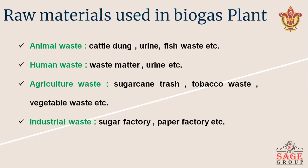The raw materials used in a biogas plant for the production of biogas include: animal waste such as cattle dung, urine, fish waste, and human waste; agricultural waste such as sugarcane trash, tomato waste, and vegetable waste; and industrial waste such as waste raw material from sugar factories and paper factories.